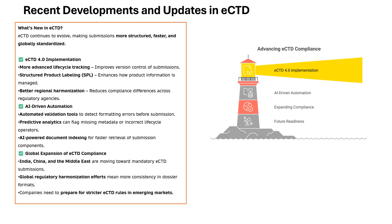ECTD isn't just a standard — it's an evolving technology and big changes are happening right now. ECTD 4.0 is the latest version, designed to enhance lifecycle tracking and structured product labeling, giving regulators better control over submission changes and making approvals faster and more transparent. AI-driven validation tools automatically detect formatting errors before submission — imagine getting instant feedback on missing metadata or incorrect lifecycle operators. Additionally, emerging markets like China, India and the Middle East are shifting towards ECTD compliance, requiring stricter guidelines to avoid rejection.